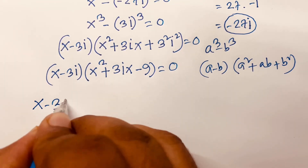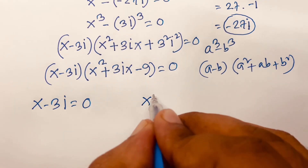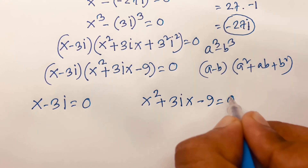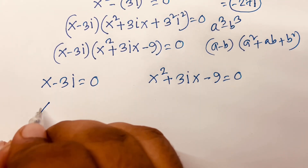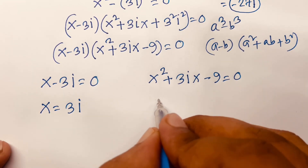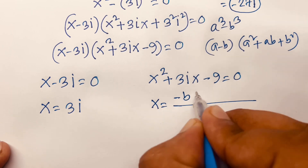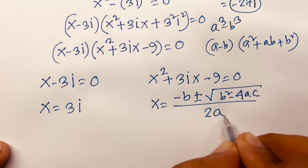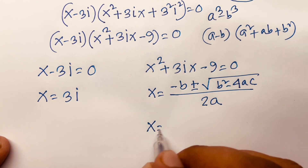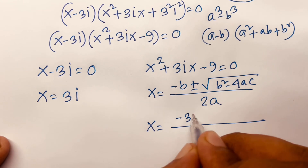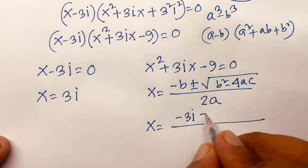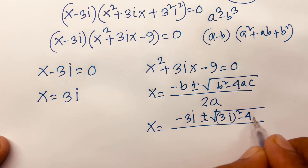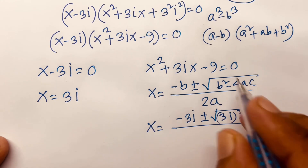Case one: x minus 3i equals 0, so x equals 3i. Case two: x² + 3ix minus 9 equals 0. Using the quadratic formula x equals (minus b ± √(b² minus 4ac)) / 2a, where b equals 3i, a equals 1, and c equals minus 9.